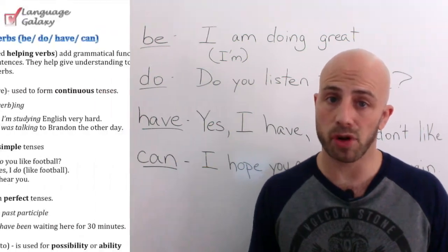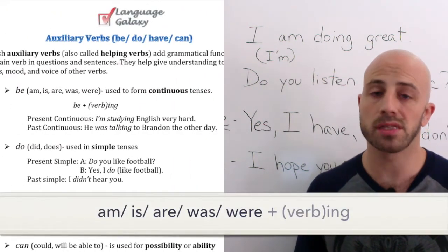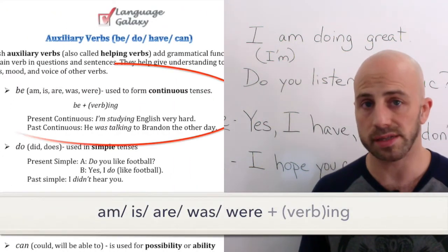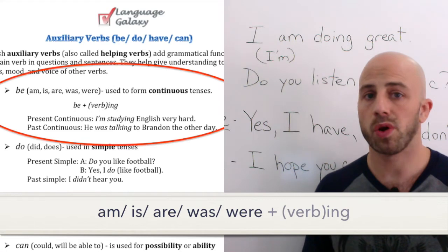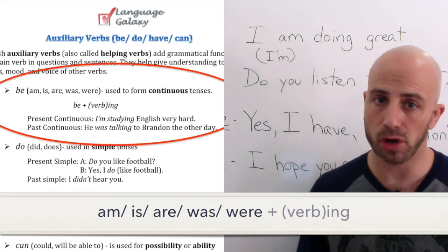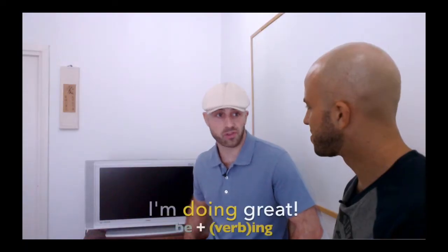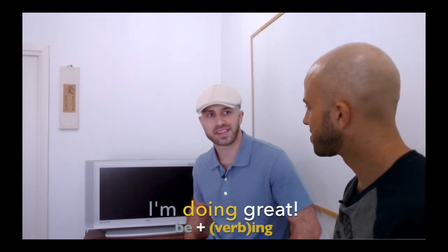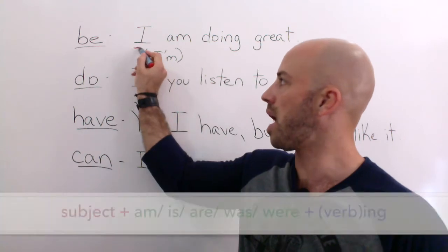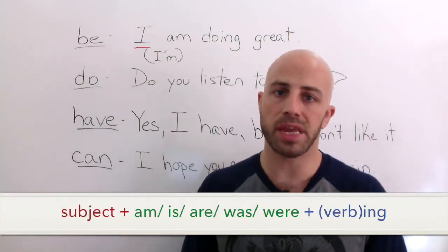We're going to look at 'be' first. 'Be' is used to form the continuous tenses, which use the -ing form of the main verb. James says 'I am doing great.' We have the subject 'I' and the 'I' form of the auxiliary verb, which is 'am.'